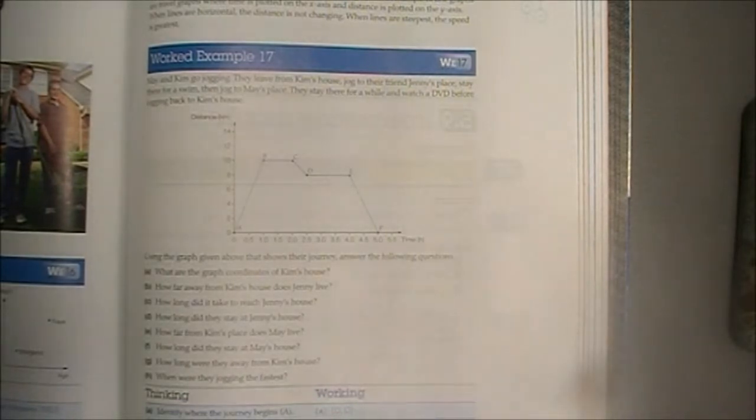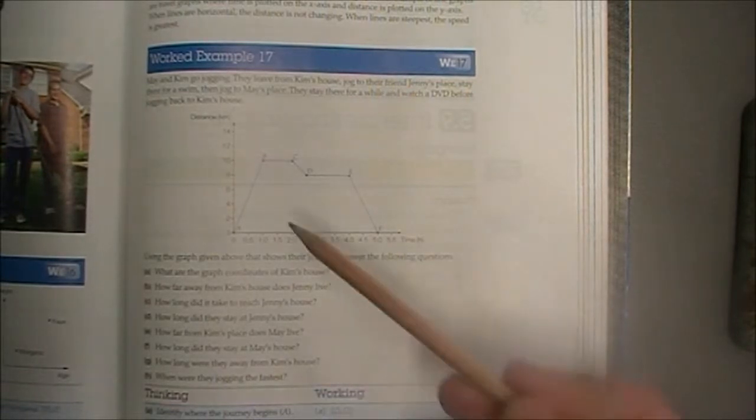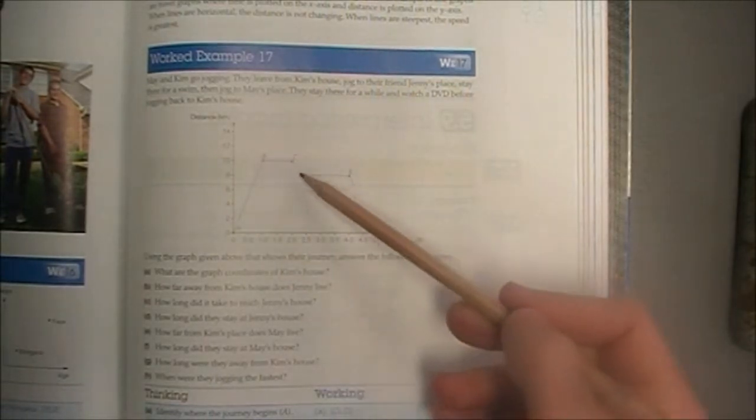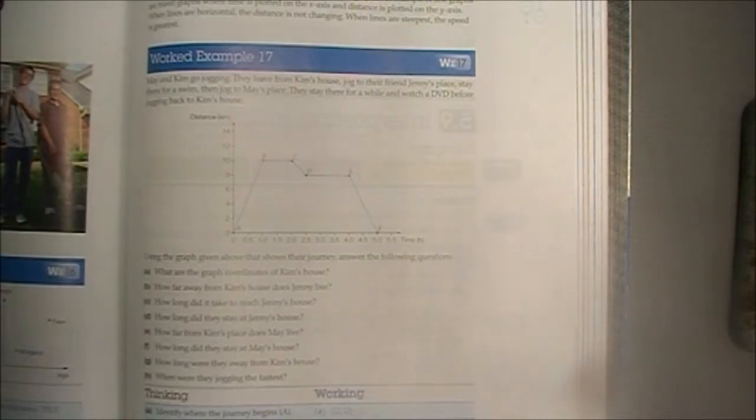Worked example 17, page 307. This is an example of a line graph. Unlike our previous graph, we have a line drawn between the dot points. So the question says, May and Kim go jogging. They leave from Kim's house, jog to their friend Jenny's place, stay there for a swim, then jog to May's place. They stay there for a while and watch a DVD before jogging back to Kim's house.